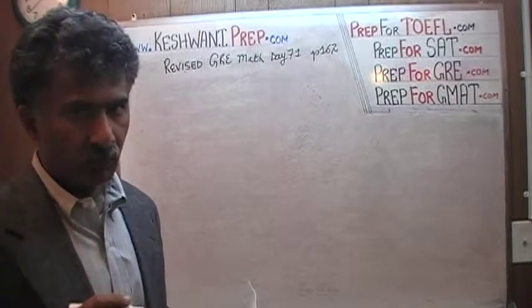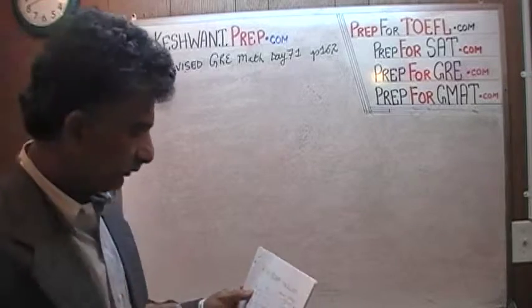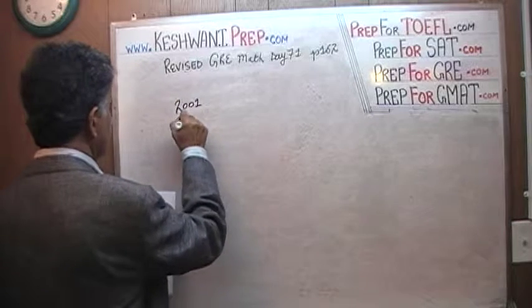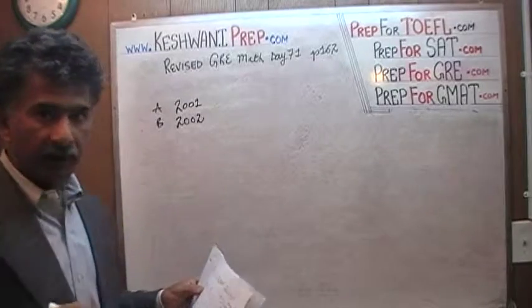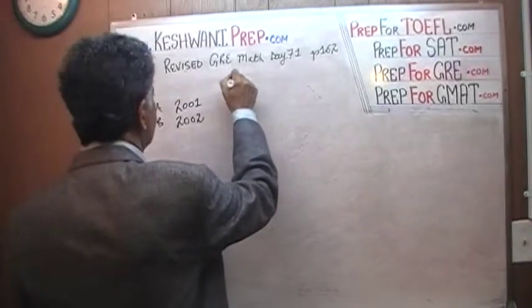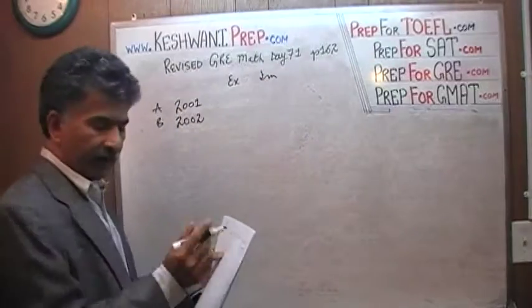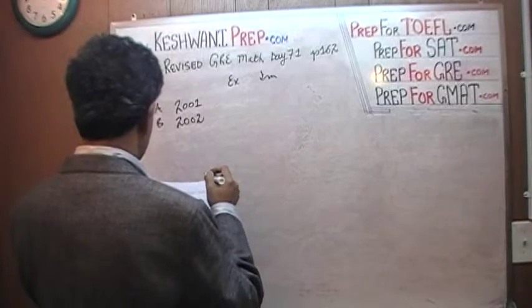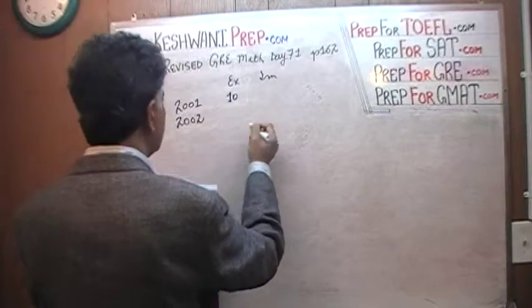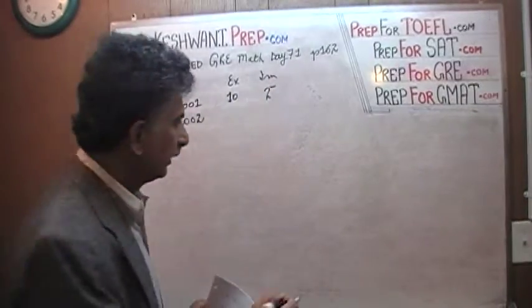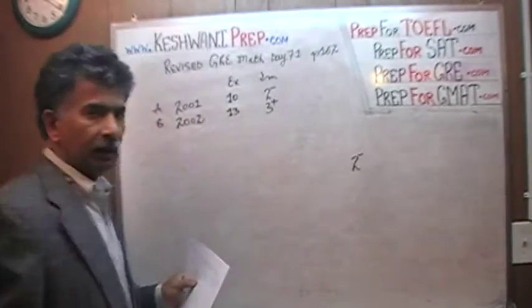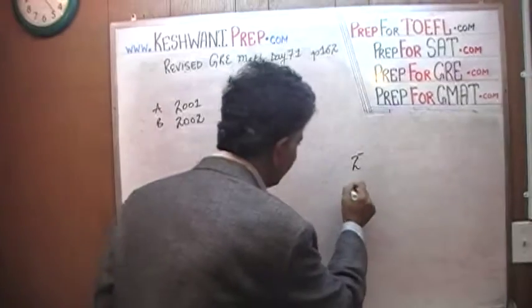It is one thing to get a hard question wrong, but something like this is a gift. Let's take a look. We have 2001 and 2002. I already have the readings — I'm just going to put them on the blackboard and you verify with me from the chart if I'm right or wrong. In 2001, exports were 10 billion and imports were just under 2 billion. In 2002, exports were 13 billion and imports were a little over 3 billion.